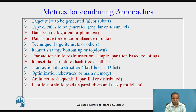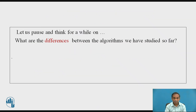Further metrics include: transaction data structure — flat file or TID list; transaction ID list; optimization dealing with skewness or main memory; architecture — sequential, parallel, or distributed; and parallelism strategy — data parallelism or task parallelism. These are the metrics for combining data to form a large data set.